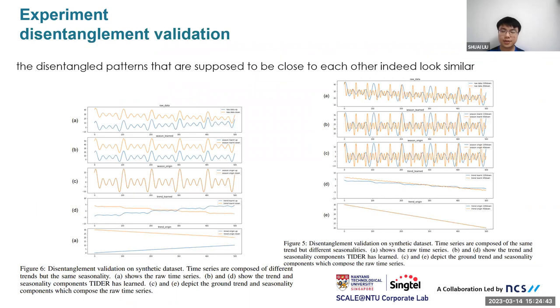Then we go to a case study. We will show what TIDER has actually learned. Here we test on two synthetic datasets, where one is composed with same trend but different seasonality, one is composed with same seasonality but different trend. After validating the results for Vt and Vs, we can find that the disentangled patterns which are supposed to be close to each other actually look similar. In the left picture, it's composed with same seasonality and different trend. The right one is composed of same trend but different seasonality. They can disentangle and show very clearly.